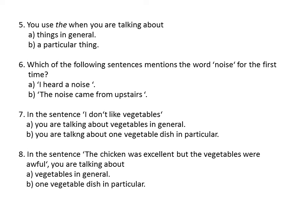Question 5: You use definite article 'the' when you are talking about — A: things in general, or B: a particular thing. B is the correct answer. We use it when we talk about a particular thing. Question 6: Which of the following sentences mentions the word 'noise' for the first time? A: 'I heard a noise', or B: 'The noise came from upstairs'. In the sentence 'I heard a noise', the word noise is mentioned for the first time, so the correct answer is A.